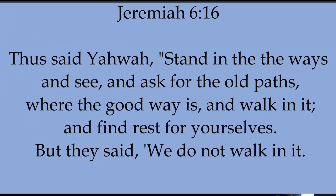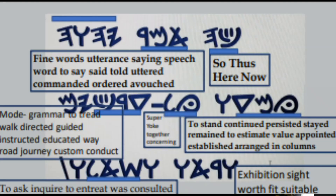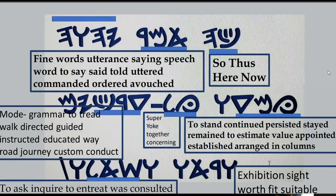Jeremiah 6:16 will be dissected word by word. The first word is Kof-He, defined as so, thus, here, now. The second word, Aleph-Mem-Resh, is defined as fine words, utterance, speech, saying, word — to say, said, told, uttered, commanded, ordered, avouched. That word has an amazingly long and rich definition. Then we have Yod-He-Wah-He.